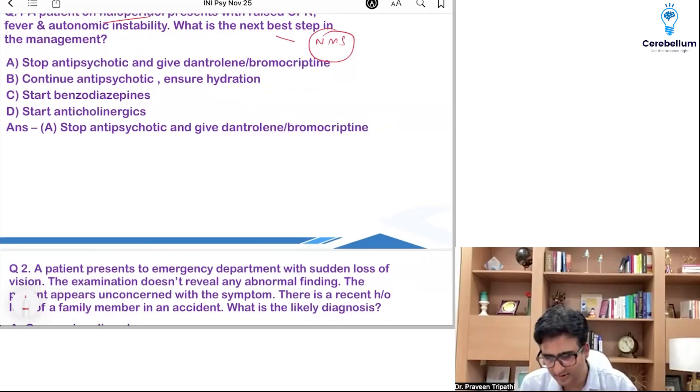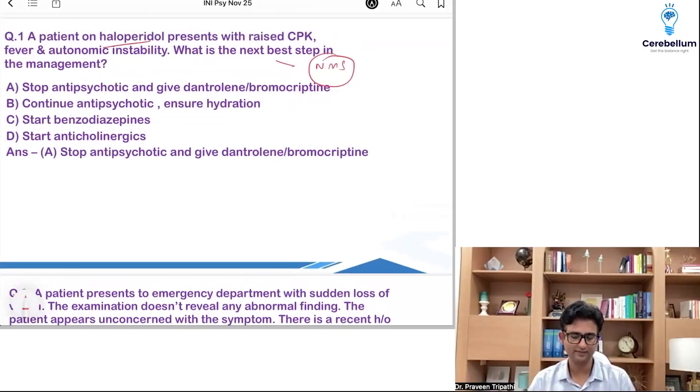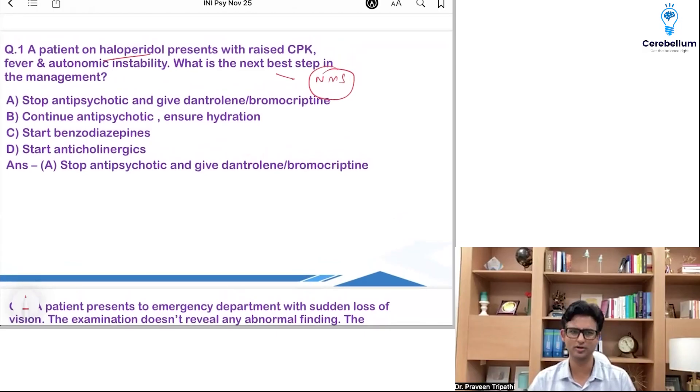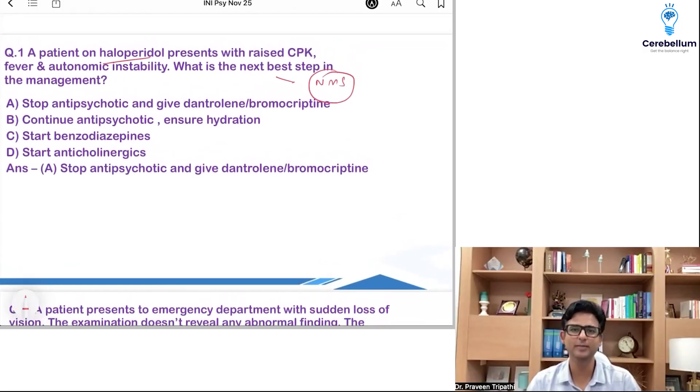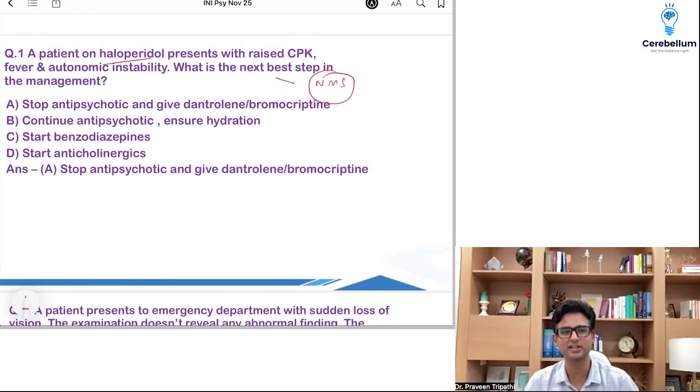Somebody is asking sir how to prepare for such googly. See, they are not googlies. If we just study superficially with the hope that everything would come from the PYQs or last year subjects, even if they ask questions from previous year topics they are going vertically deeper. They're asking deeper questions. Look at this question right. Even in this question this is a PYQ only but now they are making it USMLE type. What is the next best step in the management right.